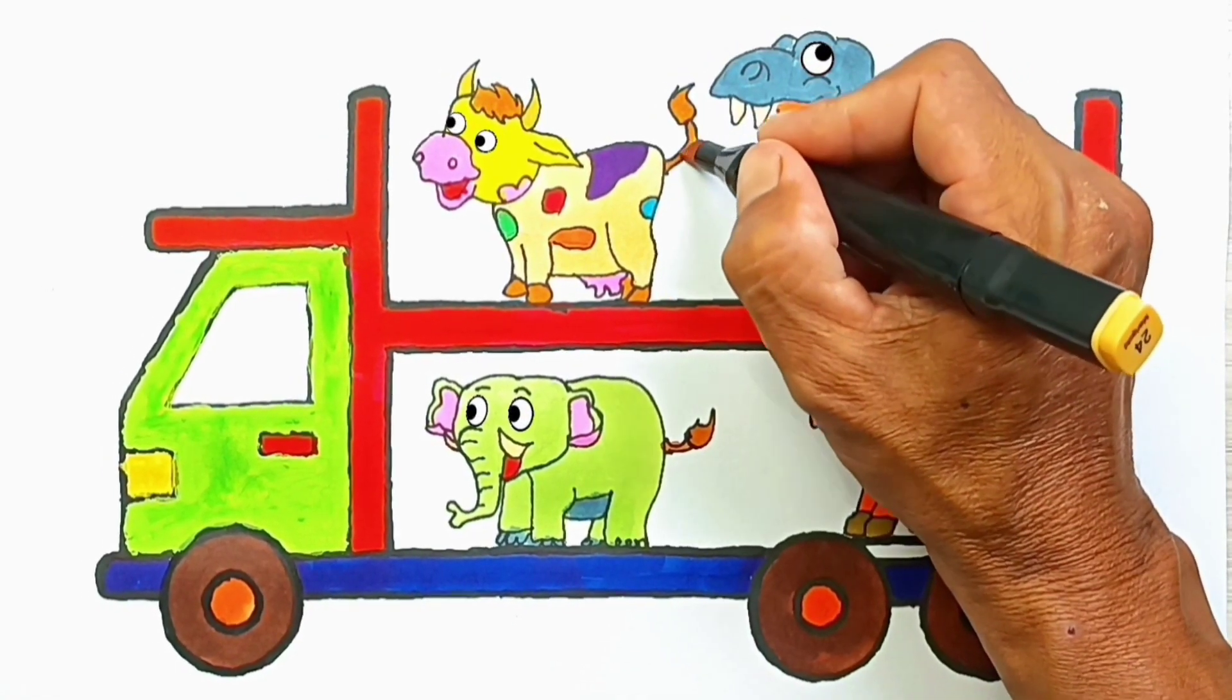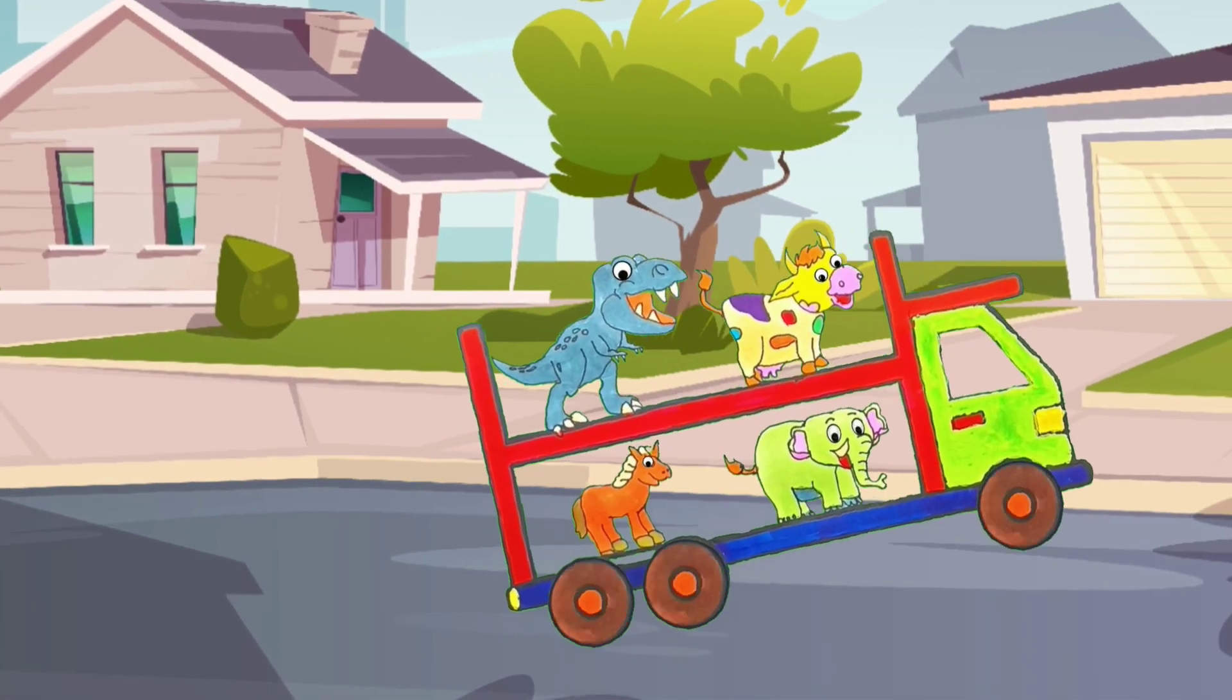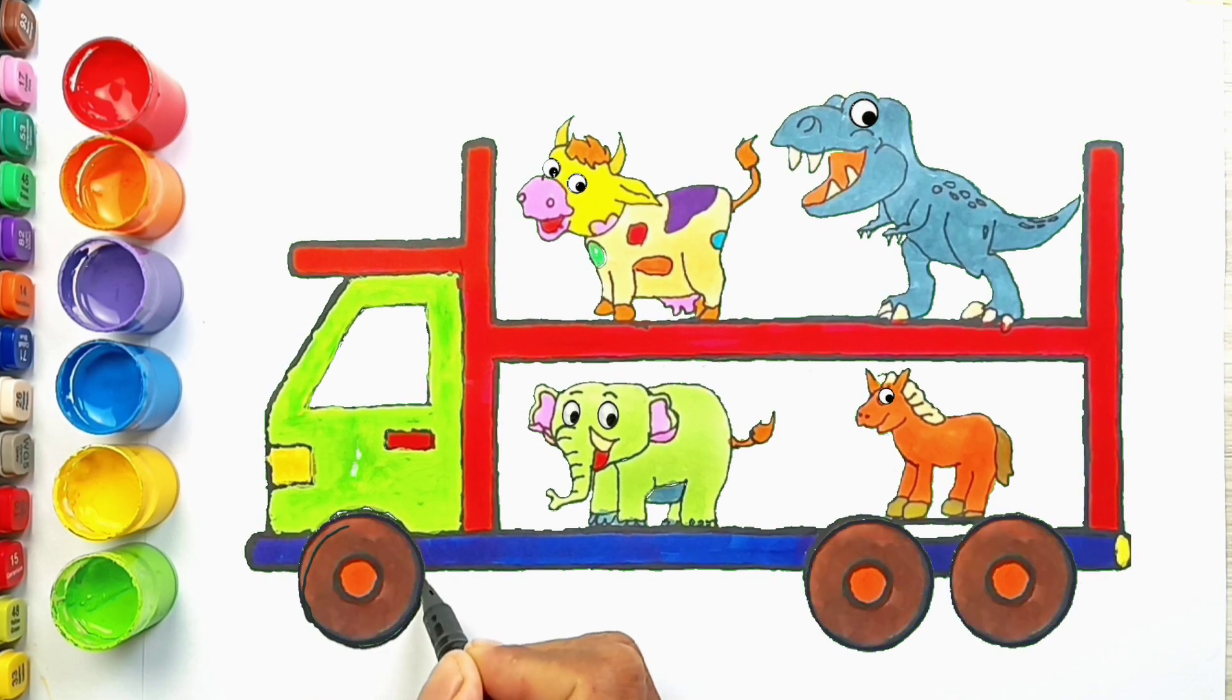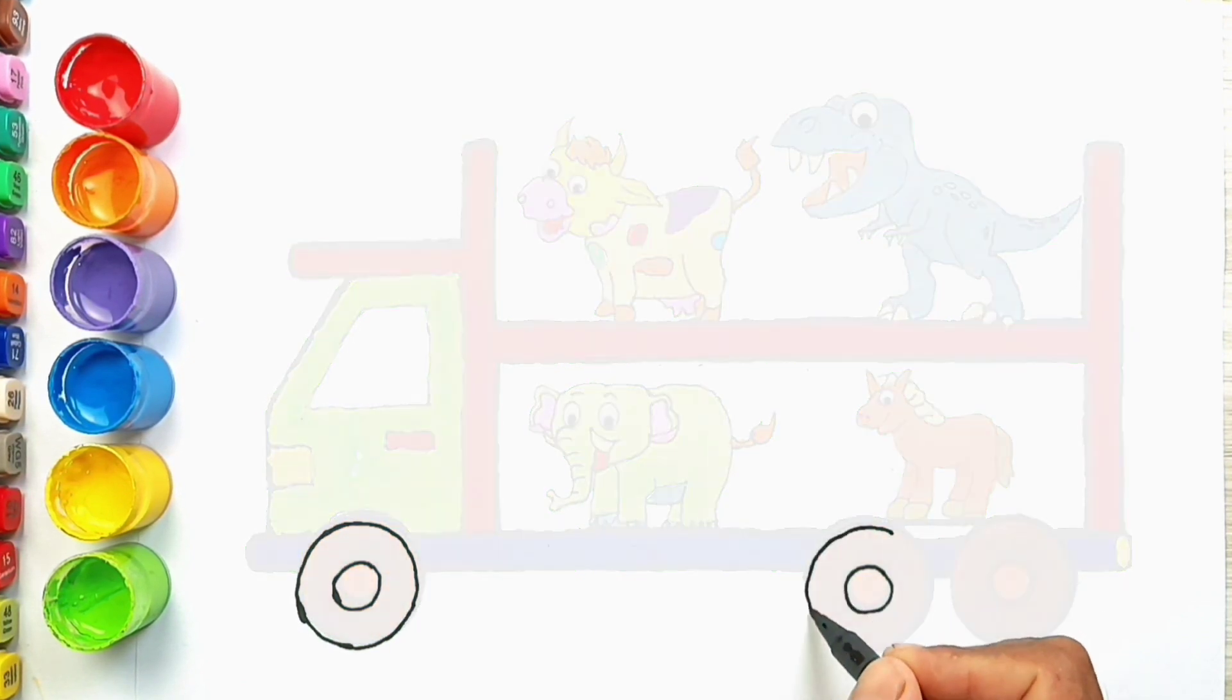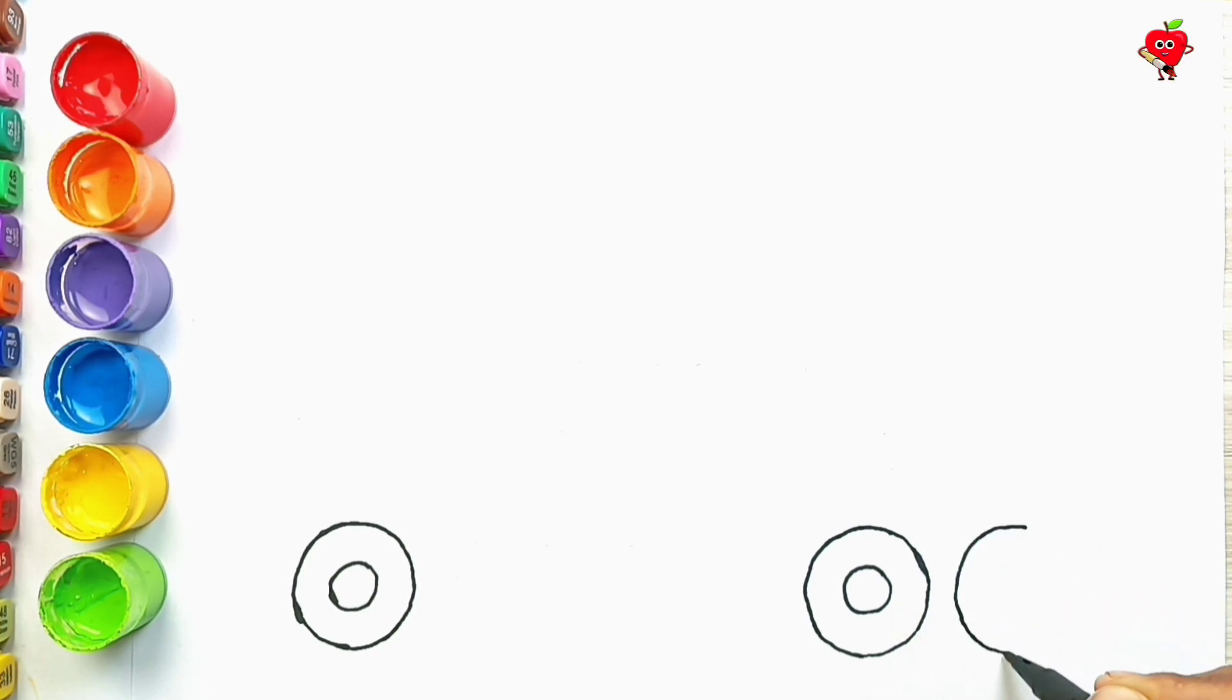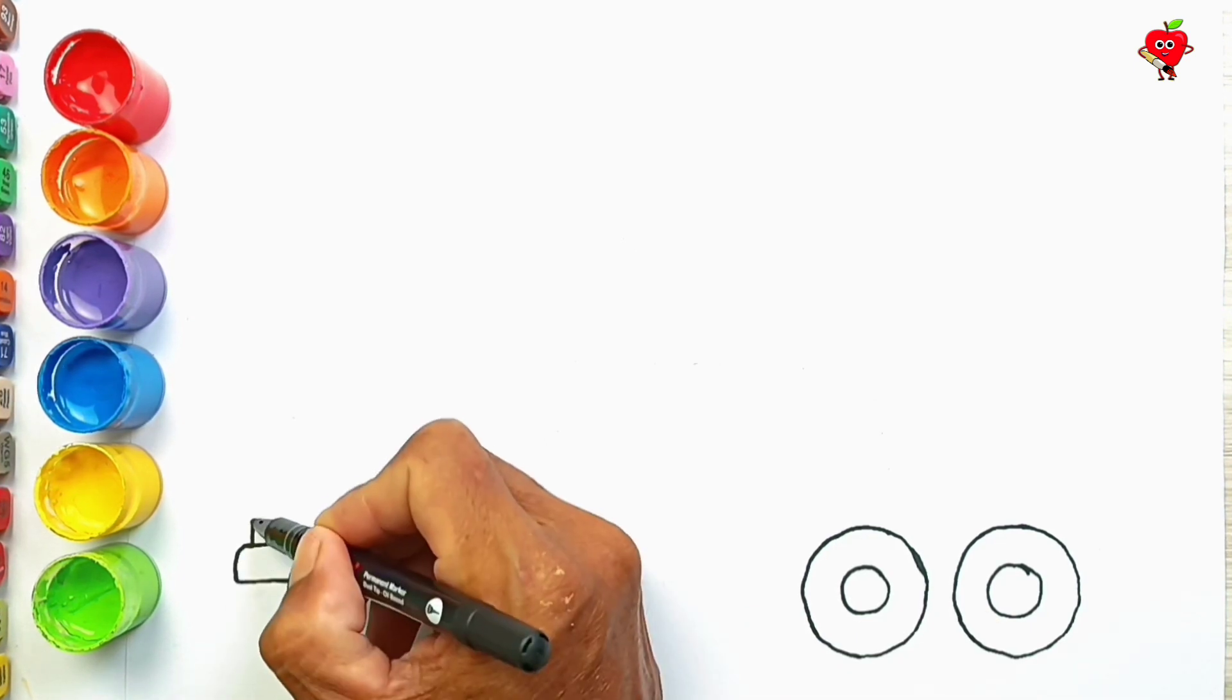Funny painting art! Hello everyone, in this video I will give a tutorial on how to make an image of an animal transport vehicle. Let's get started! First we can draw big and small circles for the wheels of the animal truck car. The next step, make car chassis and cabin.